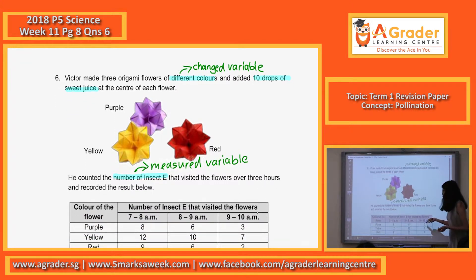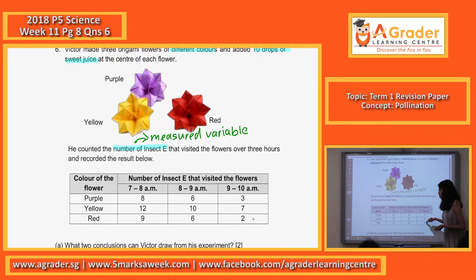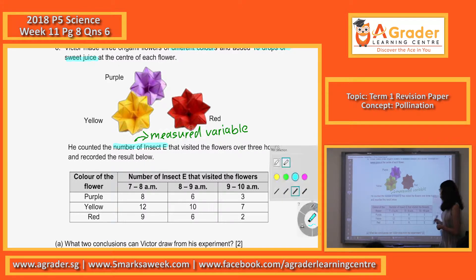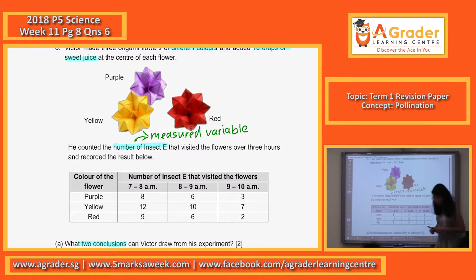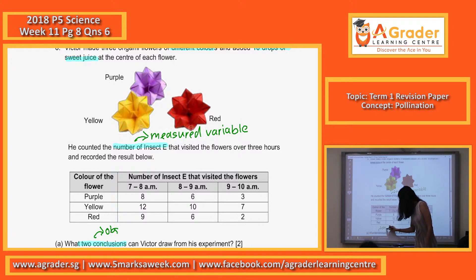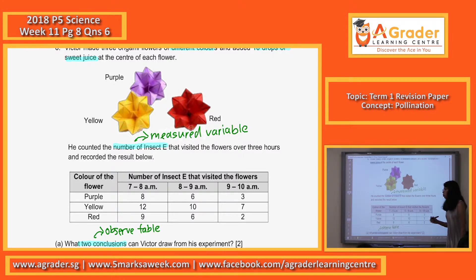So, based on these results, Jason, you have to answer A and B. What are the two conclusions that Victor may come up with from this experiment? When they say conclusions, please observe the table above. What does the table above show you? Insects are affected by the sweet juice? From the table above, it doesn't tell anything about the sweet juice.